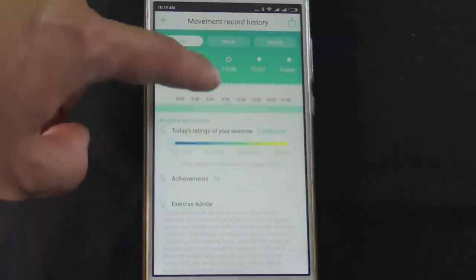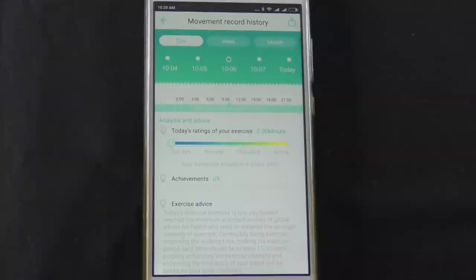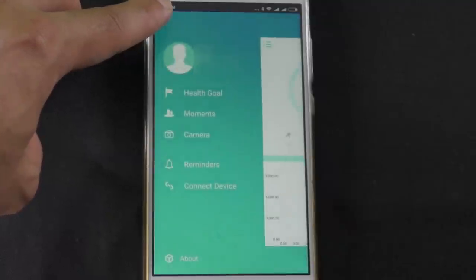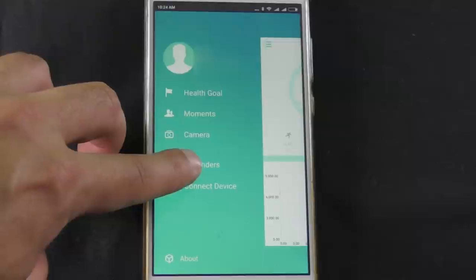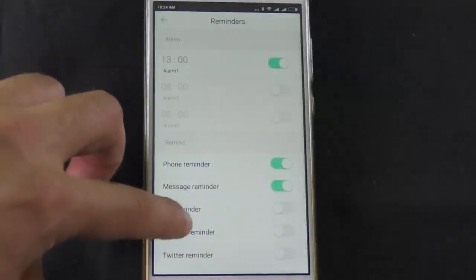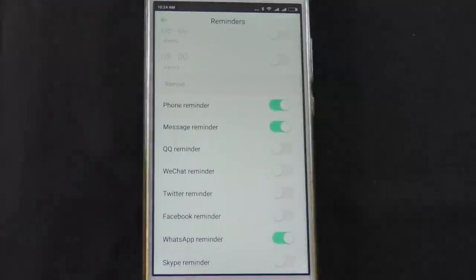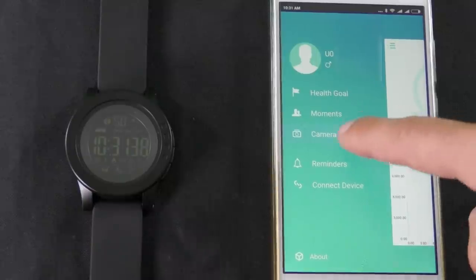The watch is supposed to notify you on incoming phone calls, SMS messages, and other social networks messaging texts such as QQ, WeChat, Twitter, Facebook, WhatsApp, and Skype. To do that, go to the main menu and choose reminders. The watch can also operate as a shutter if you want to take a photo using your smartphone's camera. To do that, go to the main menu and choose camera.